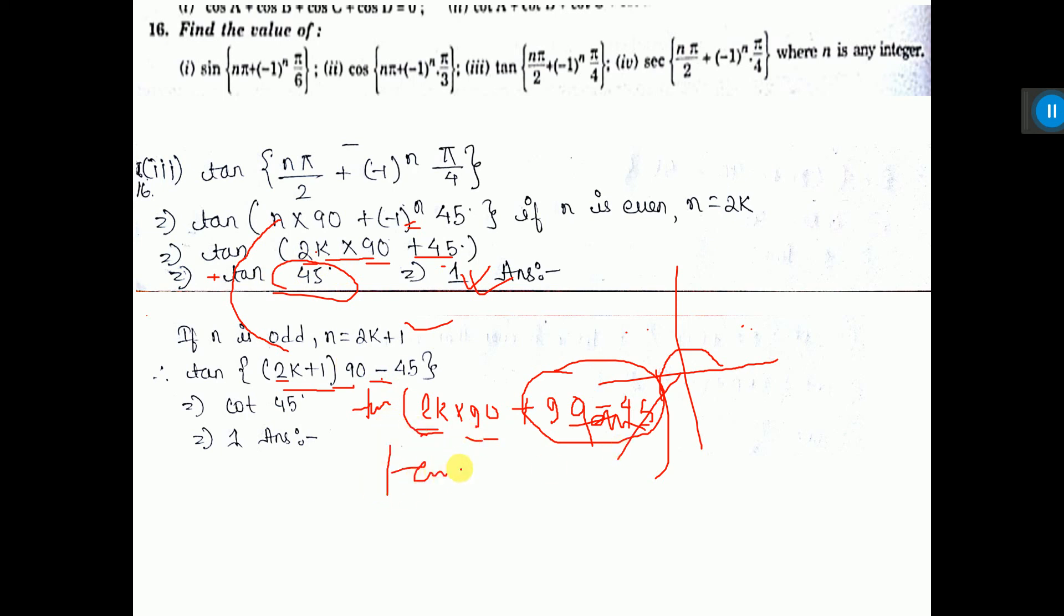Here tan theta means tan 90 minus 45. So it is 45, 90 minus 45 is 45. Tan 90 minus 45, tan 90 minus theta is cot 45, value is 1. Or directly, you can write tan 90 minus 45 is cot 45, value is 1.